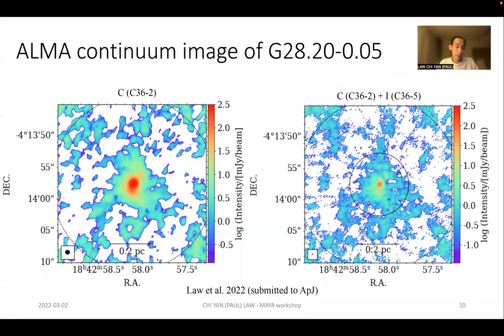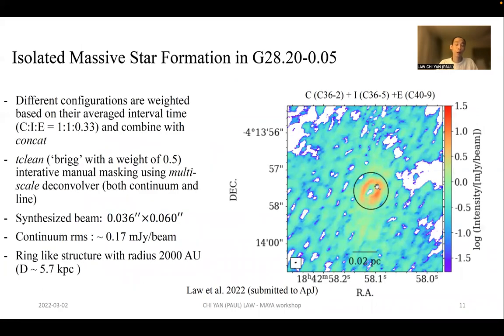Here we first study the ALMA continuum image. On the left we show the compact, and on the right we show the complex intermediate configuration. As we involve long baseline data, we can see the detailed structure involving this arc-like structure. To include the long baseline structure, we weight the different configurations and combine them using the concat function in CASA. When we clean, we apply the Briggs weighting of 0.5 and have interactive manual masking using the multi-scale deconvolver for both continuum and line imaging.